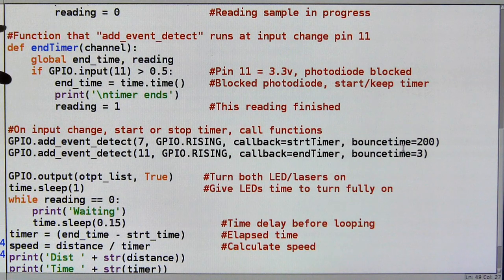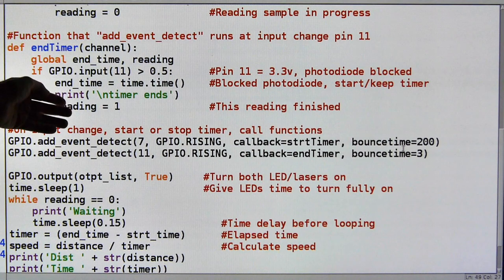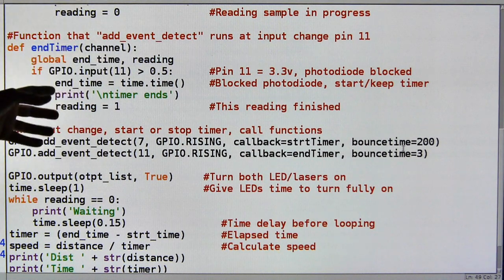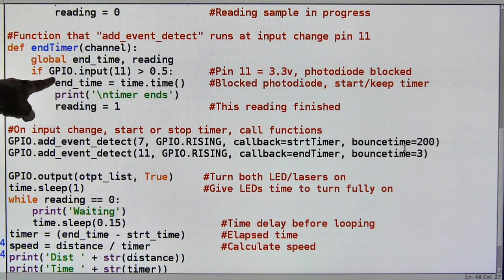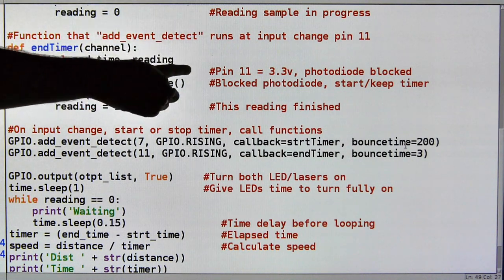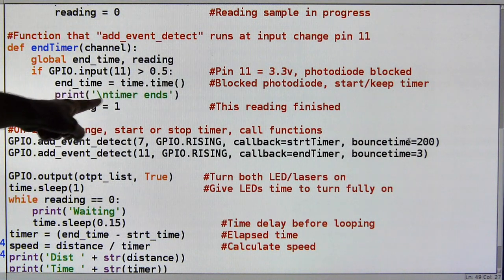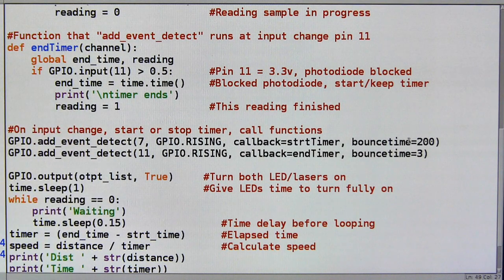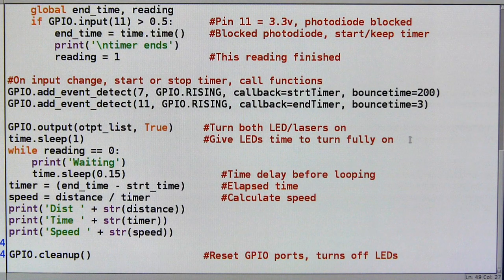And down here is the next function. This is the end timer function. So I've got to end the timer when the next beam is cut. So somebody has finished the race. The beam is cut. And I need to capture that information. So I've globalized end time and reading. And if my input on pin 11 is telling me it's been triggered. The photodiode has been blocked. I grab the end time from time.time. I print timer ends. Which we saw that message. And then I say reading is one. So the reading is done. I'm done looking for inputs.